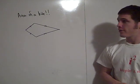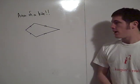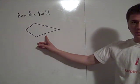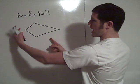This is the derivation of the area formula for a kite. A kite is a quadrilateral that has two sets of consecutive sides congruent, but opposite sides are not congruent.